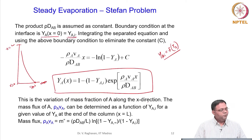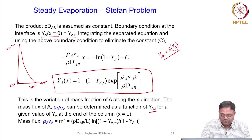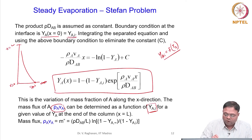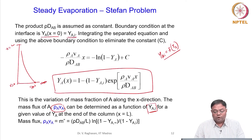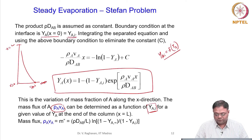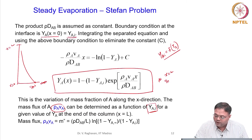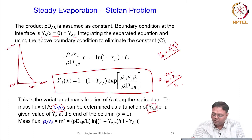The mass flux of A, rho_A * V_A, can be determined as a function of Y_AI. The variation of mass fraction of A along x is a function of the interface quantity Y_AI and rho * D_AB. Applying the boundary condition at x = L where Y_A = Y_AL (or Y_A infinity if L is very large).